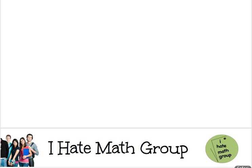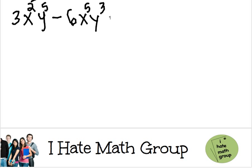Hi guys, welcome back. So here we have the following expression: 3x squared y to the fifth minus 6 times x to the fifth y cubed minus 12xy squared.